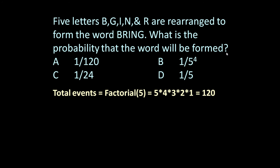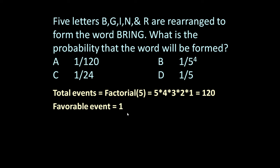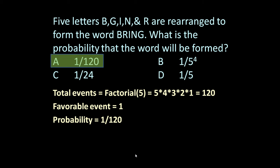Probability is given by favorable events upon total events. These 5 letters can be arranged in factorial 5 ways. Factorial 5 means 5 into 4 into 3 into 2 into 1, which equals 120 ways. In our favor, only one word — 'bring' — is possible. All other combinations are not in our favor. So probability is 1 upon 120.